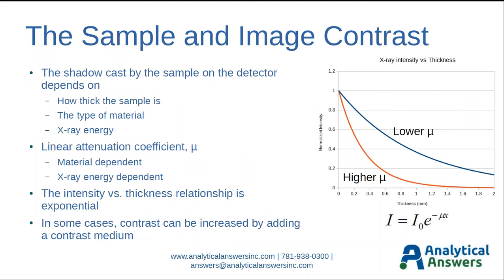Let's talk about what makes the sample produce the image on the X-ray detector and how we can control that contrast. The shadow that's cast on the detector by the sample depends on several things: how thick the sample is, the type of material, and the X-ray energy. Higher density or higher atomic number materials tend to absorb X-rays at a much greater rate. All of this is governed by the linear attenuation coefficient, which is a property of a specific material and varies as a function of X-ray energy.